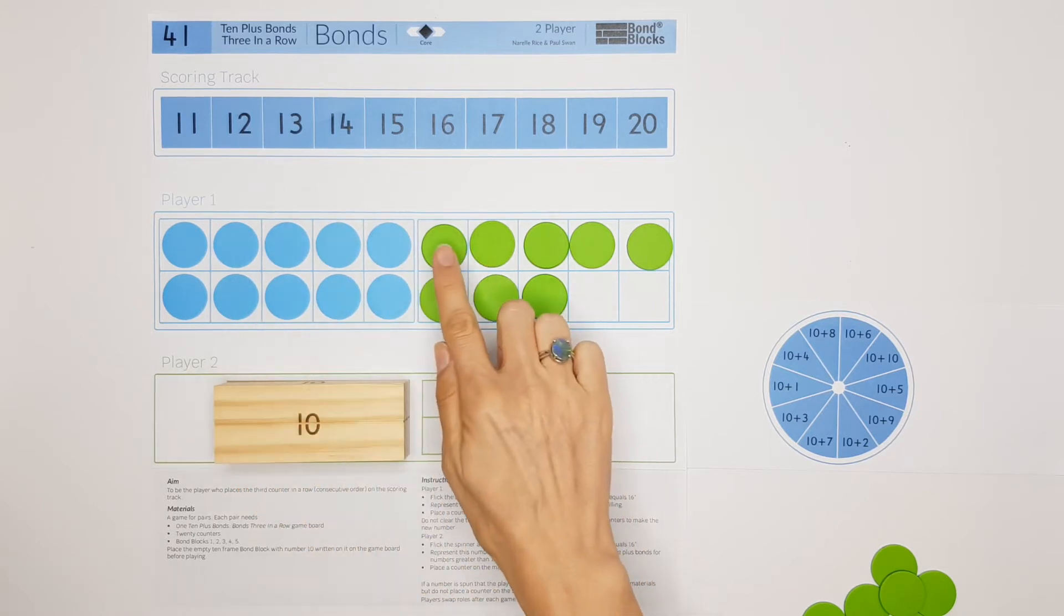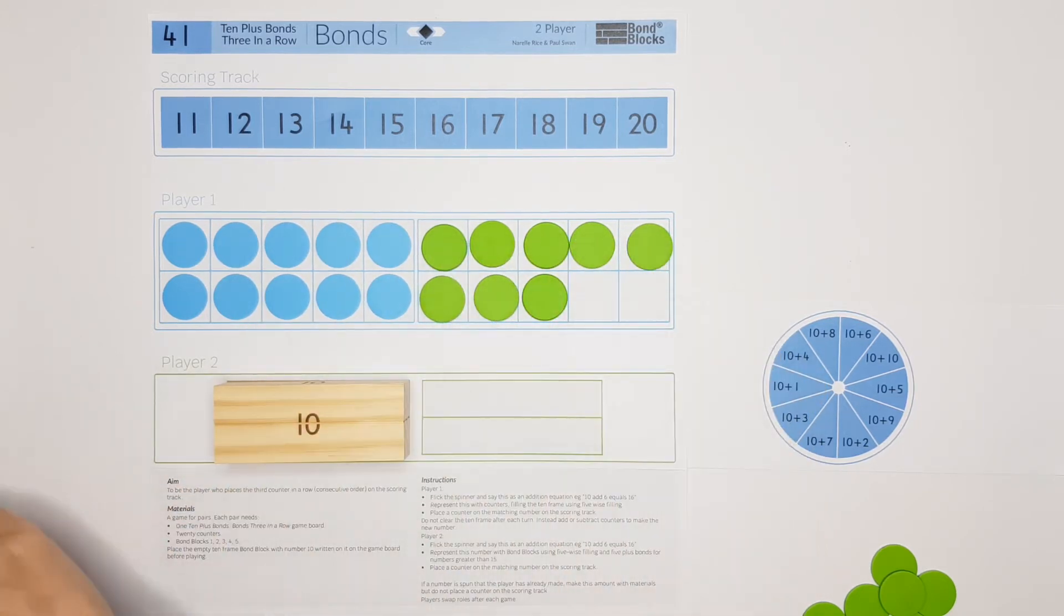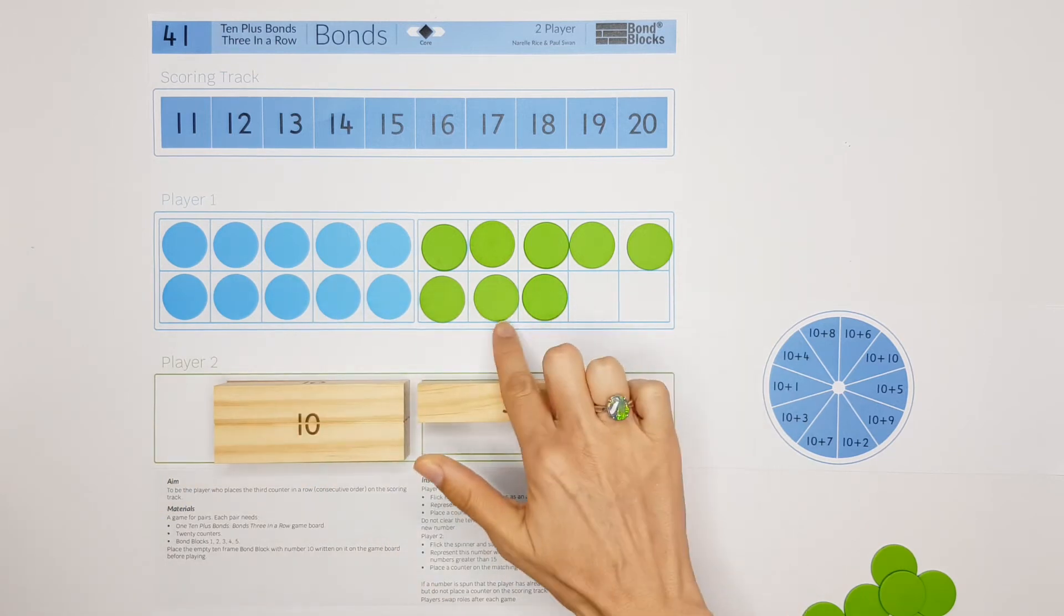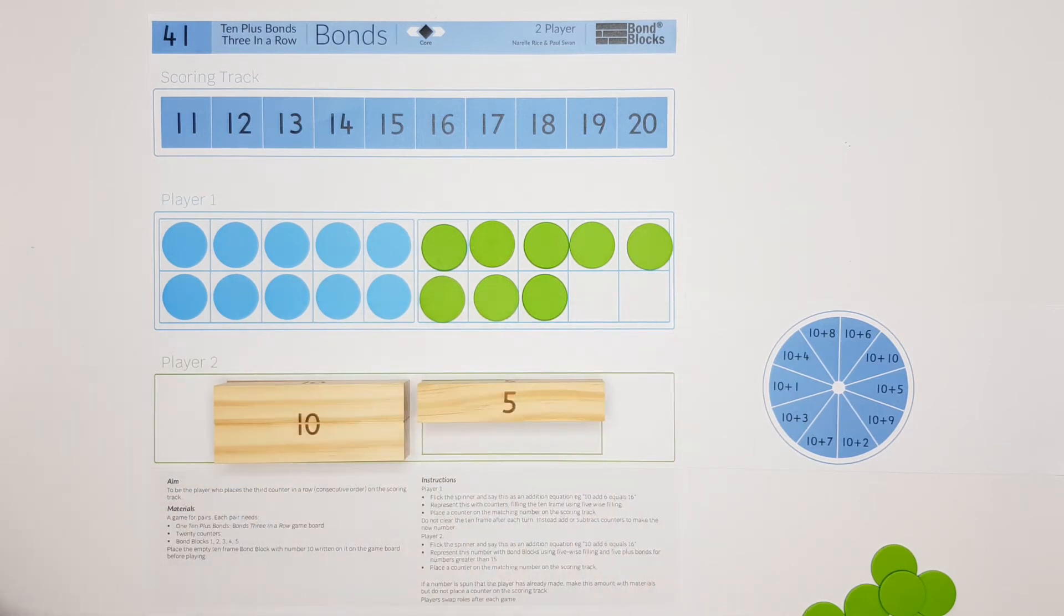We then place a block that's worth five on the top row and a block that's worth three on the second row.